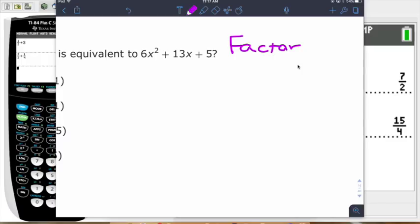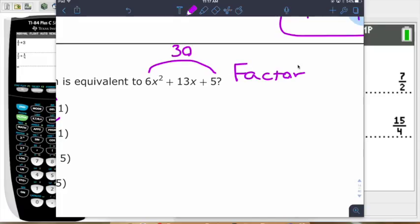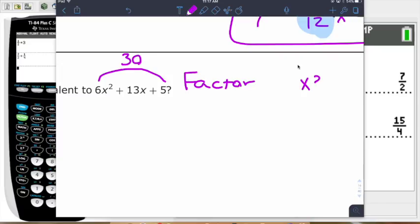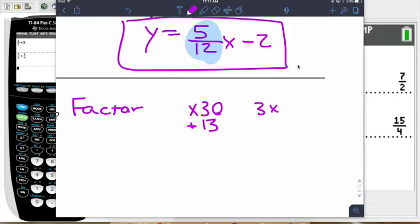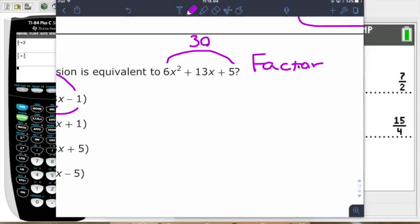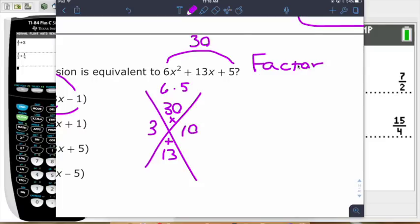I'm going to show you how I teach by factoring. What we need to do is figure out the product, that's 30 right there, as far as the coefficients go. Then we need to ask ourselves, what multiplies to 30 but then adds to 13? Two numbers I'm thinking of is we could do like 3 times 10. 3 times 10 multiplies to 30, 3 plus 10 adds to 13. Some teachers might draw this little visual thing, 6 times 5 equals 30 up there, what adds to 13 down at the bottom.